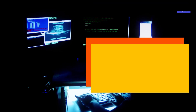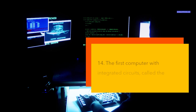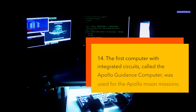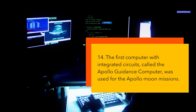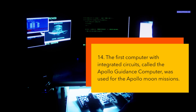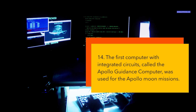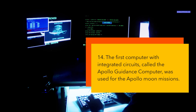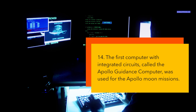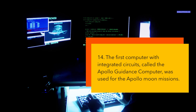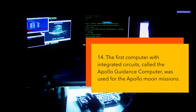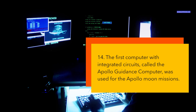The first computer with integrated circuits, called the Apollo Guidance Computer, was used for the Apollo Moon missions. Integrated circuits, ICs, are tiny electronic components that contain thousands or millions of transistors, resistors, capacitors, and other elements on a single chip of silicon or other material. They are the building blocks of modern computers and electronics. The first computer to use ICs was the Apollo Guidance Computer, AGC, which was developed by MIT for NASA's Apollo program in the 1960s. The AGC could control the navigation and guidance of the Apollo spacecrafts to and from the Moon, with a memory capacity of 72 kilobytes and a processing speed of 1 MHz.